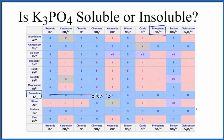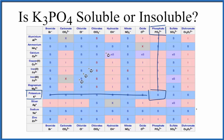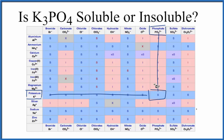We go over and down, and we have that S. That means potassium phosphate will be soluble in water. When you put it in water, it'll dissolve and dissociate into its ions. You'll end up with three potassium ions and then the phosphate ion.